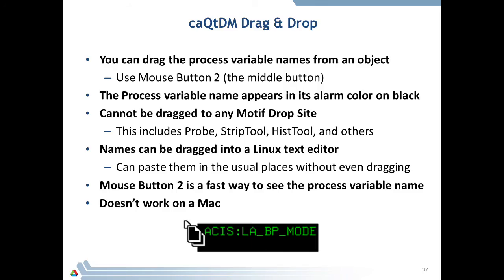PVs are drag and drop from an active running CAQtDM display. Use the middle mouse button to get the PV name. You can drop it into a text editor — this is a good way to find out the PV name of something on the display. Note: it doesn't work on a Mac.